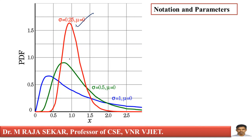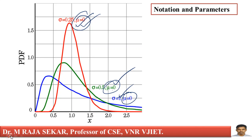The three curves — red, blue, and green — all have mu equal to zero, but their standard deviations differ: sigma equals 0.25 for red, 0.5 for green, and 1 for blue. All of them have mu equal to zero, but standard deviation is changing.